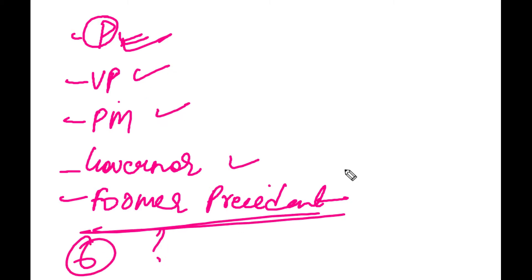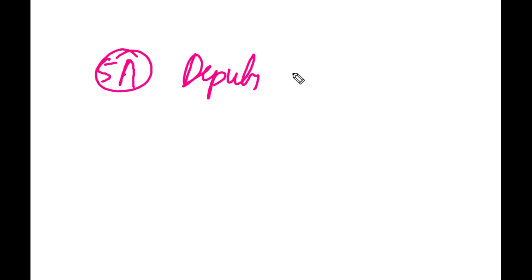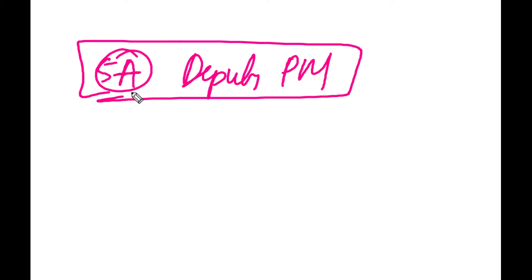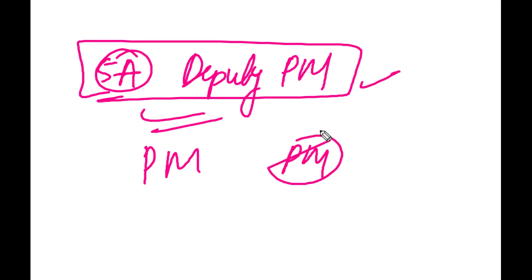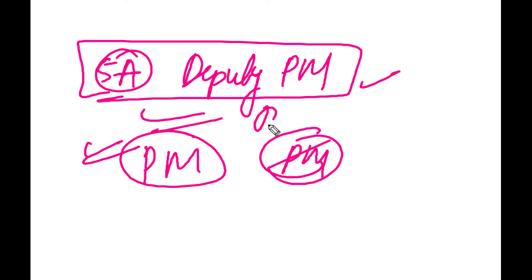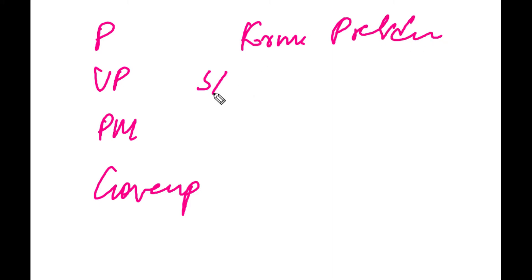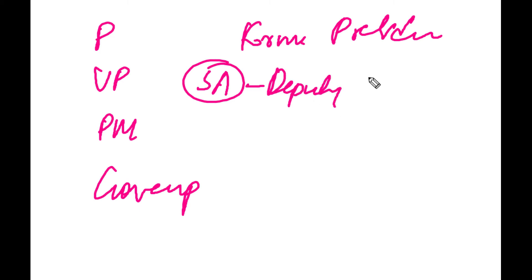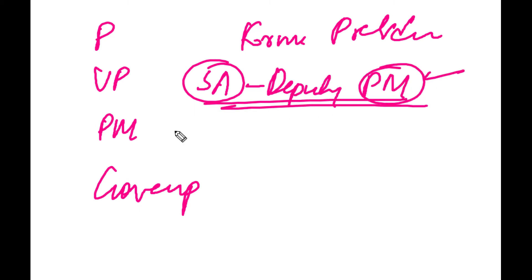So the former president is at the fifth number — after president, vice president, prime minister, governor, comes the former president. Who is at the sixth number? They added rank 5A: deputy prime minister. Because sometimes there are two candidates for prime minister, and one becomes prime minister while the other becomes deputy prime minister. So this is the 5A rank — they are also given a good position. So the order is: president, vice president, prime minister, governor, former president, and then 5A — deputy prime minister.